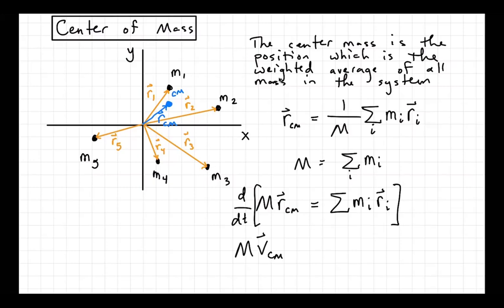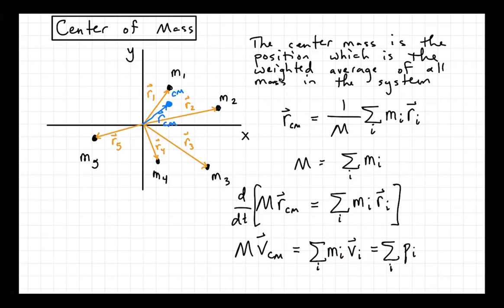We'll call that V_CM — the time rate of change of the position of the center of mass, how fast and in which direction is the center of mass moving. On the other side, we can take the time derivative of each term, so that would be Mi times Vi — the masses of each individual particle times the velocity of each individual particle. This is just the sum of all the momentum in the system, the total momentum of the system, which I'll denote P_tot.